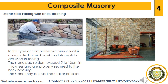The first type is stone slab facing with brick backing. In this type of composite masonry, a wall is constructed in brickwork and a stone slab is used for facing. The stone slab seldom exceeds 5 to 10 cm in thickness and is properly secured to the brick backing. The stone used may be natural or artificial.